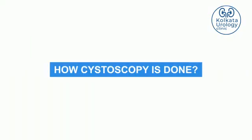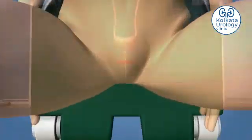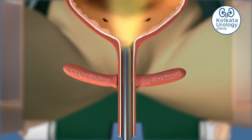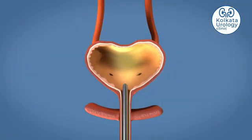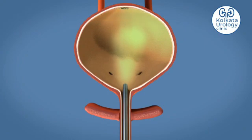Cystoscopy is a procedure where we put small endoscopes inside the urinary bladder to visualize or see the things inside the urinary bladder. It is usually done in the OPD procedure room where the patient lies on the table and we put local anesthesia inside the urinary passage and then introduce the small endoscope through the urinary passage inside the bladder.